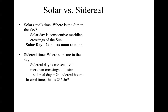Sidereal time is based on where a star is in the sky, and a sidereal day is the consecutive meridian crossings of some given star. One sidereal day is 24 sidereal hours, which is just a little bit shorter than a civil day — it is 23 hours and 56 minutes of a civil day.